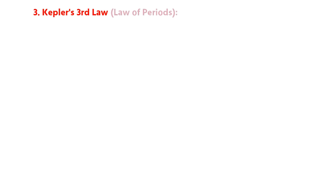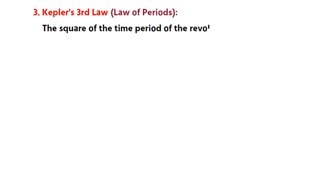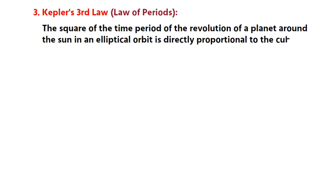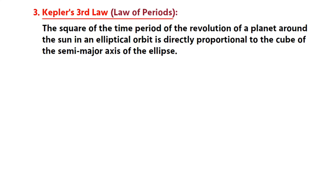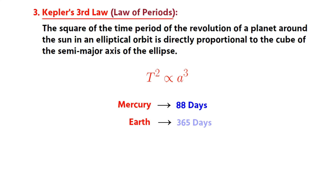Kepler's third law of planetary motion, also known as the law of periods, states that the square of the time period of the revolution of a planet around the sun in an elliptical orbit is directly proportional to the cube of the semi-major axis of the ellipse. This implies that the period for a planet to orbit the sun increases rapidly with the radius of its orbit. Thus, Mercury, the innermost planet, takes only 88 days to orbit the sun, the Earth takes 365 days, while Saturn requires 10,759 days to do the same.